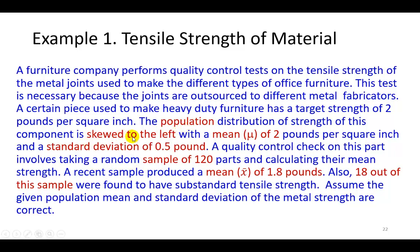The population itself is skewed to the left. It has a mean of 2 and a standard deviation of 0.5. You take a sample of 120, and you find the average of the sample to be 1.8. This is with respect to the tensile strength of metal. And you find also that 18 out of this sample are of substandard quality.